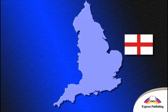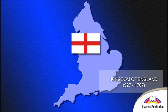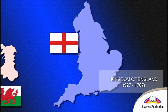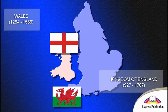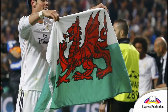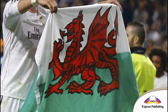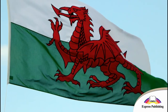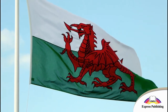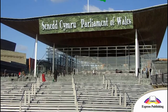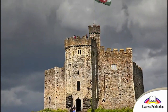Wales is part of the United Kingdom, but this flag is not a part of the Union Jack. The Welsh flag has got a red dragon on it. The background is green and white. You can see this flag on government buildings in Wales.